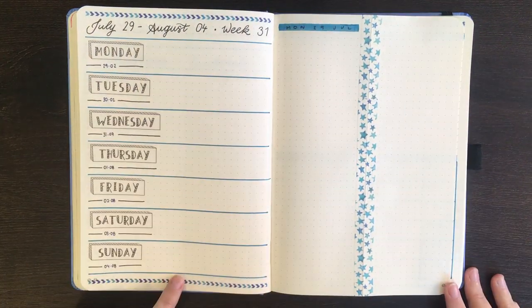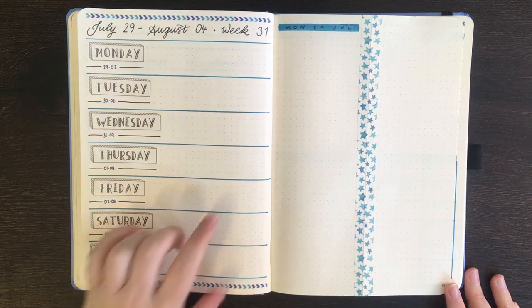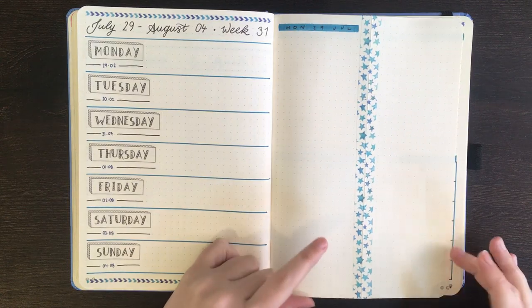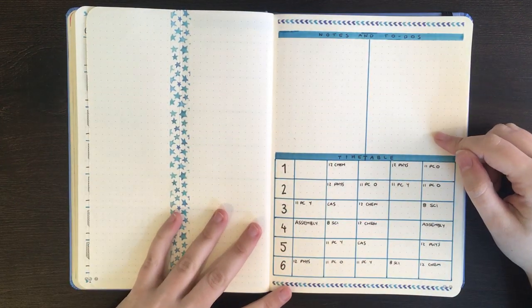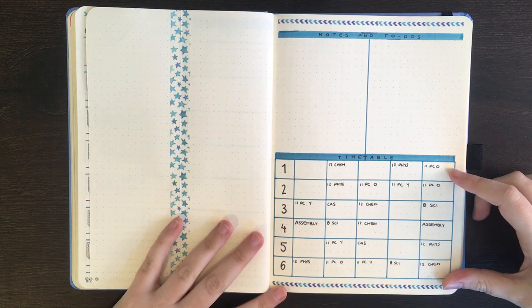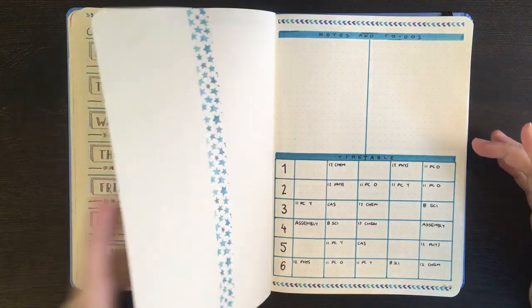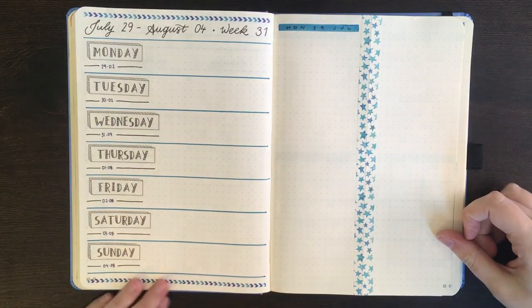Alrighty, so we have a section for each day of the week for my events list, a space for my to-do lists for each day, a notes and to-do section for the week, and then my school timetable. What I'm going to do now of course is go and write in my events that I know I have coming up next week. As usual, just using my pen artist pen.